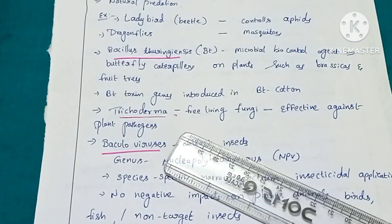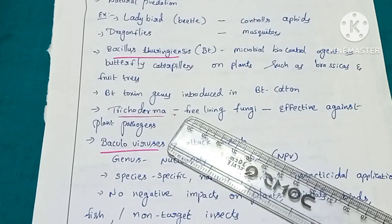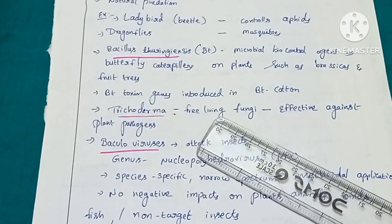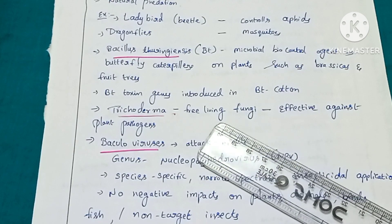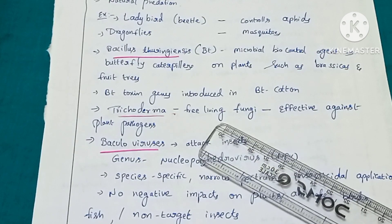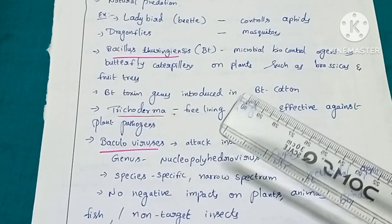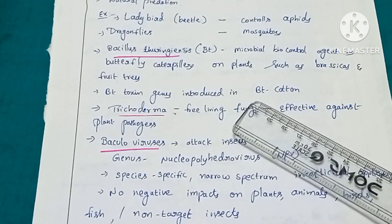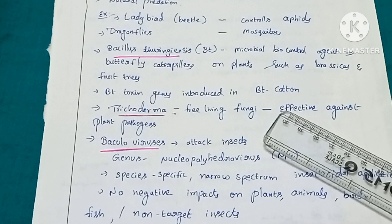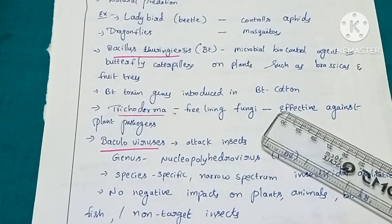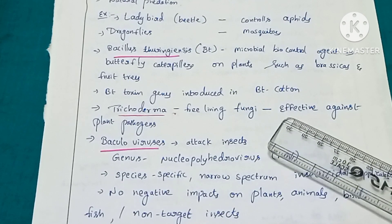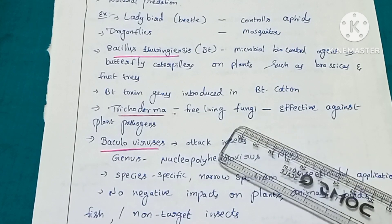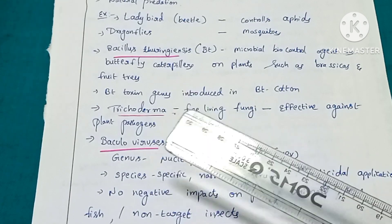On the other side, transgenic plants have been developed. The Bacillus thuringiensis endotoxin-producing genes are introduced into these transgenic plants. Examples of such transgenic plants include BT cotton and BT brinjal, which carry the BT gene — the endotoxin-producing gene.